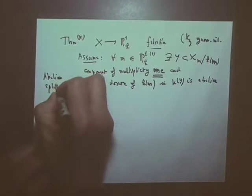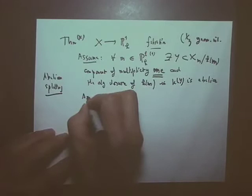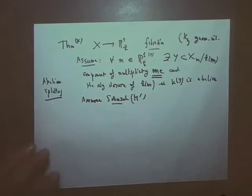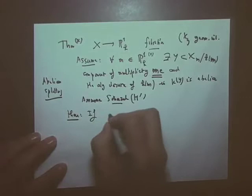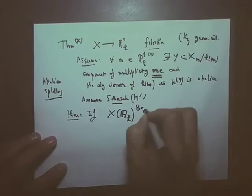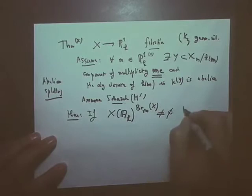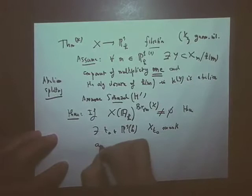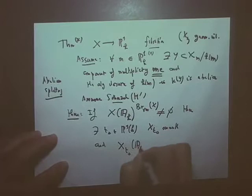And then we assume Schinzel's hypothesis. And it's in the sophisticated version, well anyway, the consequence of Schinzel's hypothesis H. So I'm going to be very precise. If X of A_K bar vertical of X is not empty, then there exists a T₀ in P¹ of K, with X_{T₀} smooth, and X_{T₀} of A_K not empty.